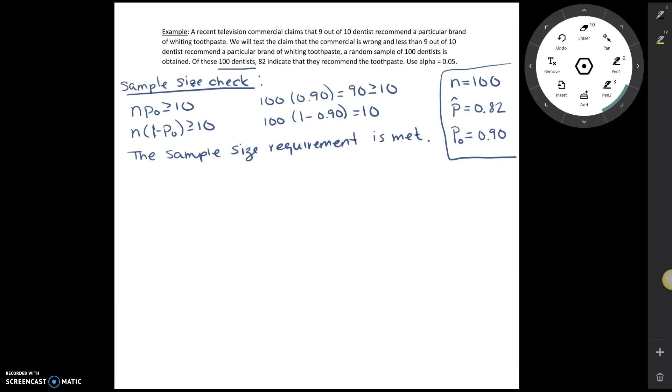So our next step that we need to do is we need to write out our hypotheses. And you had practiced this in the last module. And so you saw when writing out your hypotheses, you always write out your null and then your alternative. So now we need to identify what each of these are. So notice we're testing the claim that the commercial is wrong and less than 9 out of 10 dentists recommend. So in other words, we're testing the claim that the population proportion is less than 9 out of 10, which is the same thing as 0.90. So then in the null, we're going to set the population proportion equal to 0.90.